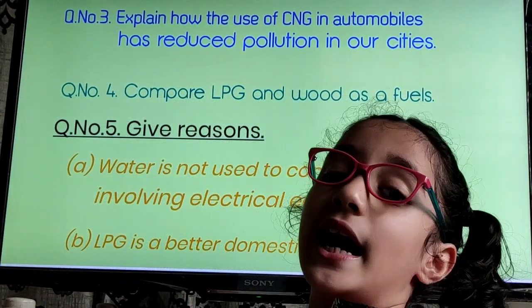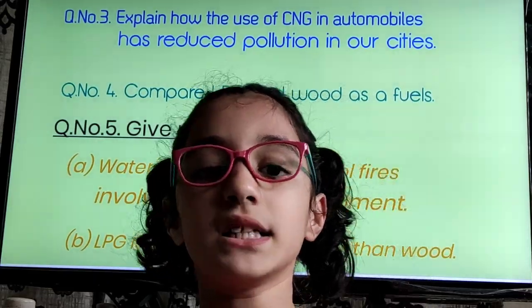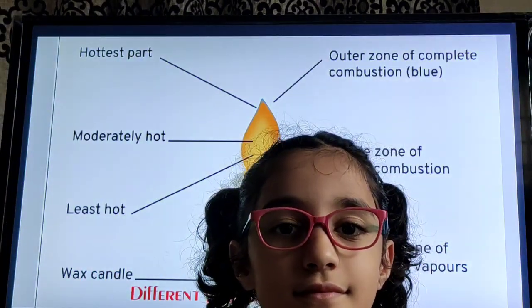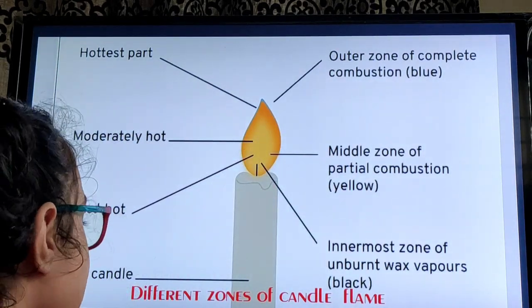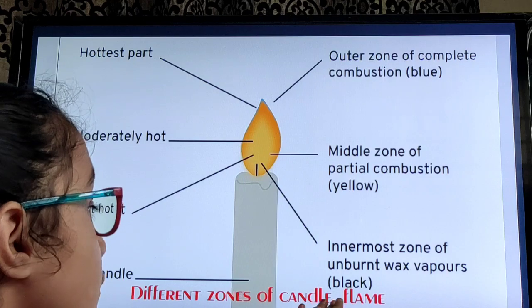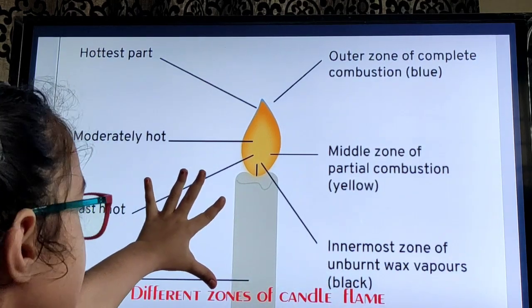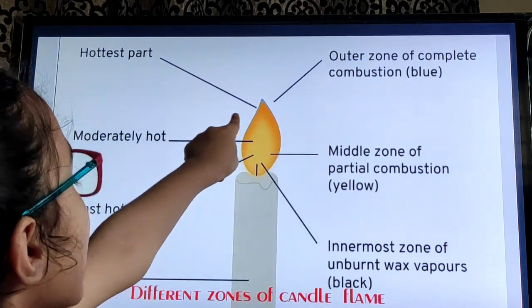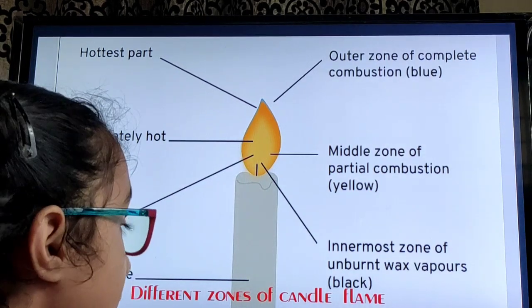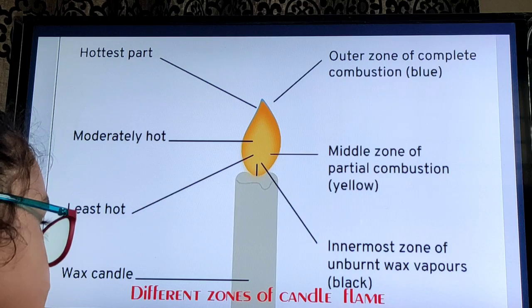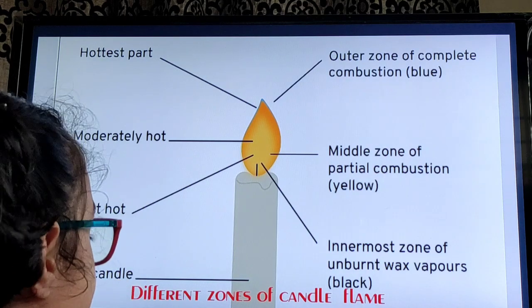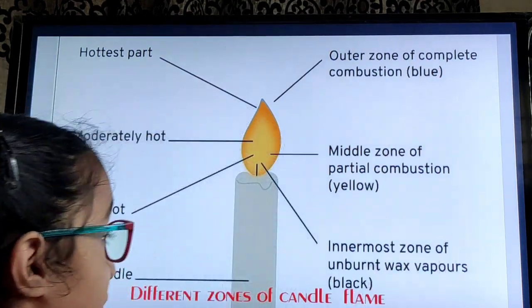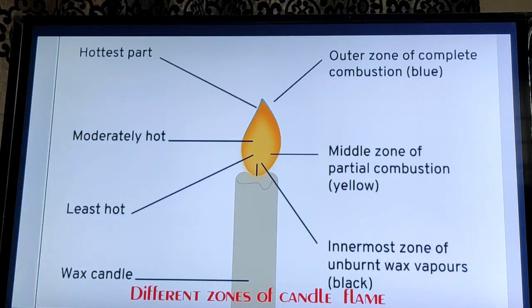Number 2, it leaves behind no residue after its combustion. Question Number 6: Make a labelled diagram of a candle flame. There are different zones of a candle flame. First, there is a wax candle. Above it comes a dark structure — it is called the innermost zone of unburnt wax vapors, and it is the least hot. Above it comes the middle zone of partial combustion. It is yellow and is also called moderately hot.